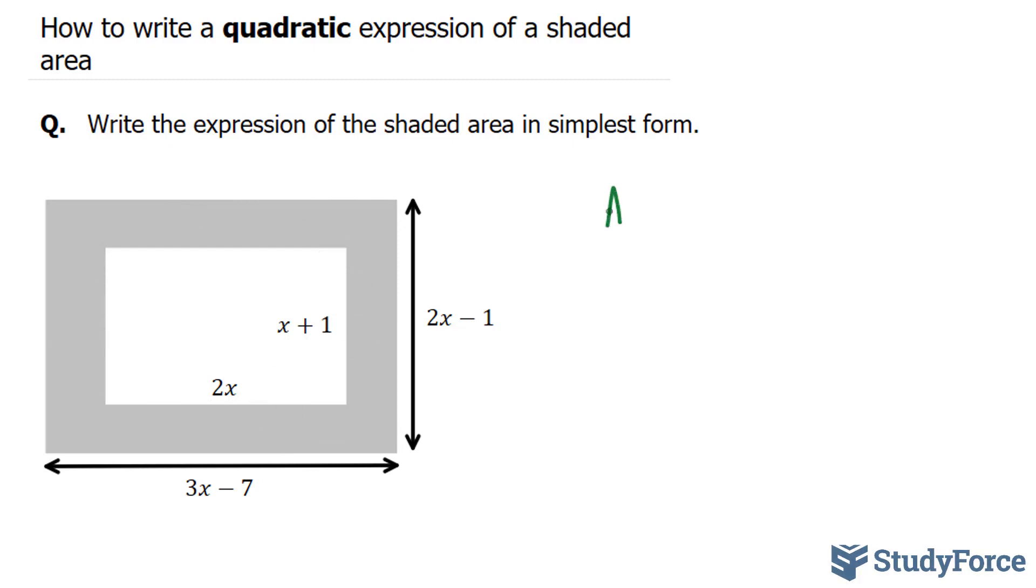Remember that the area of a rectangle is length times the width. So the first thing that I'll do is find the area of this bigger one, and then I'll find the area of the smaller one, and then subtract them.